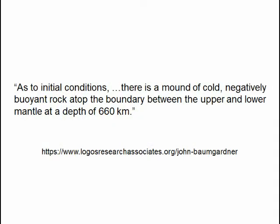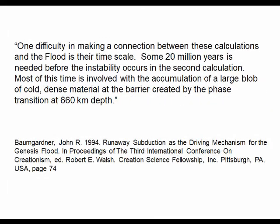As to initial conditions, there is a mound of cold, negatively buoyant rock atop the boundary between the upper and lower mantle at a depth of 660 kilometers. One difficulty in making a connection between these calculations and the flood is their time scale. Some 20 million years is needed before the instability occurs in the second calculation. Most of this time is involved with the accumulation of a large blob of cold, dense material at the barrier created by the phase transition at 660 kilometers depth.